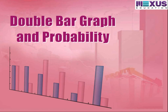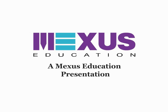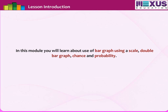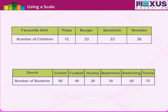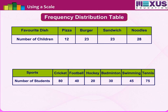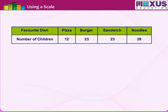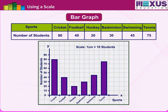In this module, you will learn about the use of bar graphs using a scale, double bar graphs, chance, and probability. We have learned how information collected can be arranged in a frequency distribution table and then put into a visual representation in the form of a pictograph and bar graph.